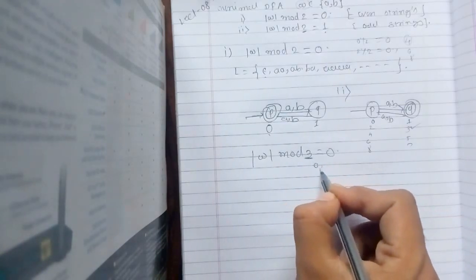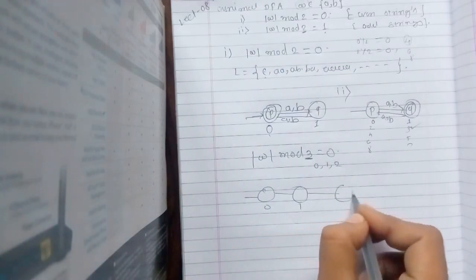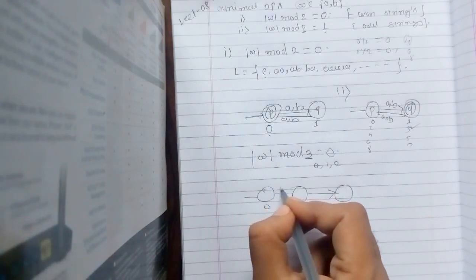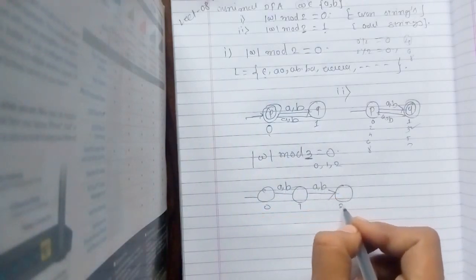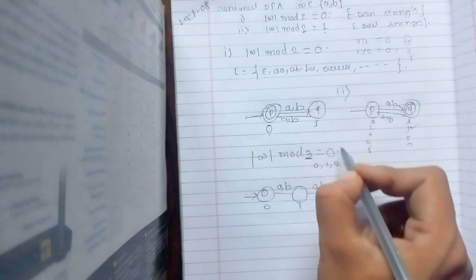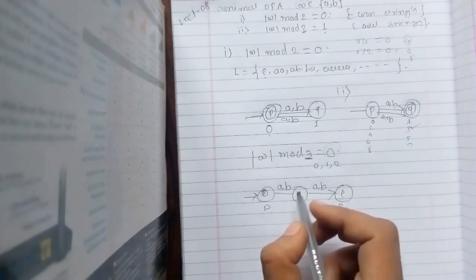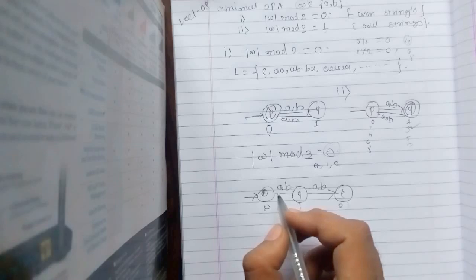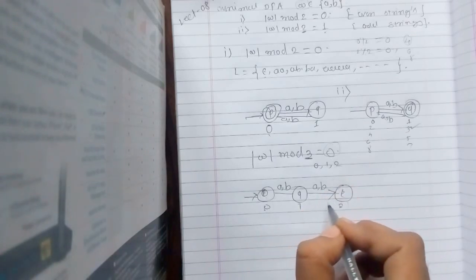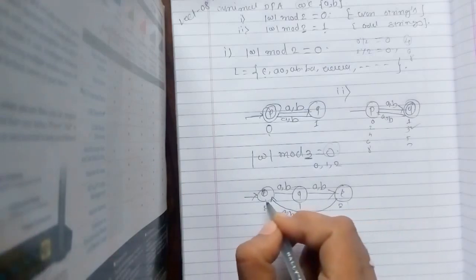Now if mod 3 equals 0 — dividing by 3 means the remainders you can have are 0, 1, or 2, so you will have 3 states. Let's call them p, q, and r: p for remainder 0, q for remainder 1, r for remainder 2. Input is a and b on each transition. I require remainder 0, so state p is the final state. A string of length 3 mod 3 gives remainder 0, so it is accepted. The transitions cycle: length 1 goes to q, length 2 to r, length 3 back to p, and so on.